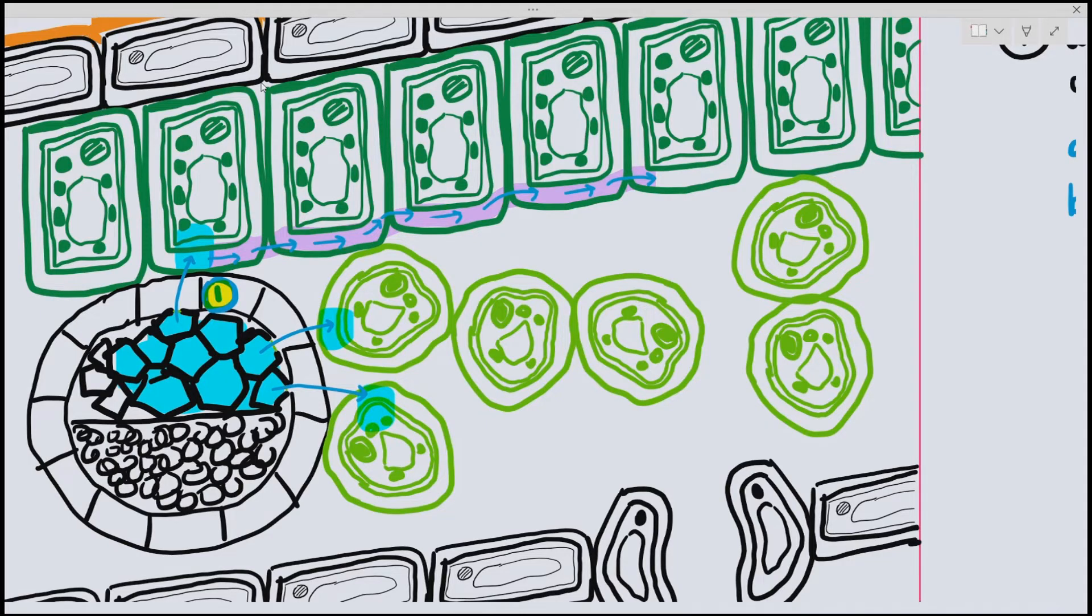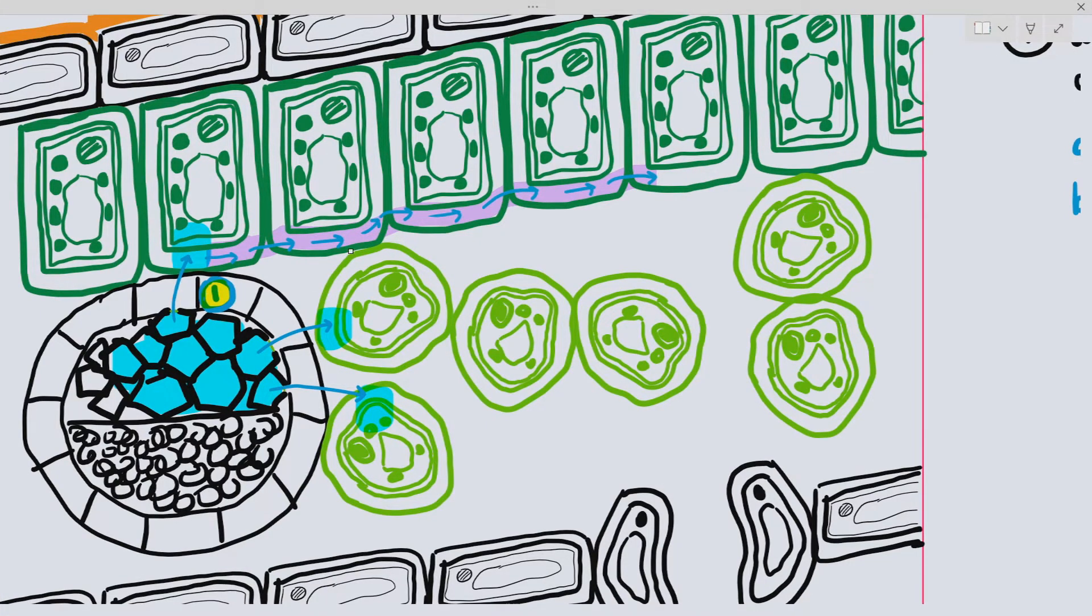Or in another pathway, they can actually cross through the cell surface membrane and the vacuole and enter another plant cell by crossing through the other cell surface membrane, which I've highlighted in orange.